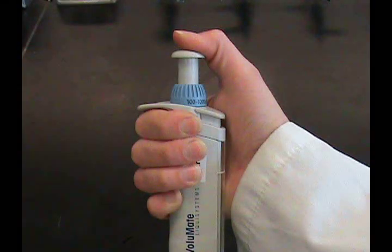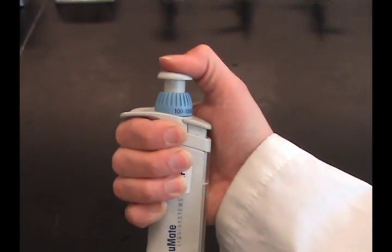Holding the pipette vertically, wrap your hand around the pipette. Allow your thumb to have control over the plunger button.